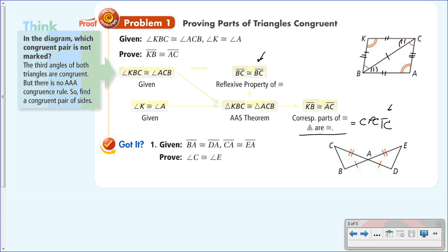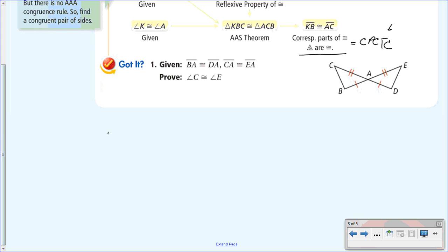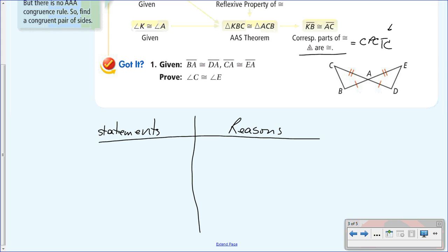Once you use one of the four methods to prove the triangles congruent, as long as you have corresponding parts, they're congruent. For number one: given BA is congruent to DA, and CA is congruent to EA, prove angle C is congruent to angle E. In our two-column proof, statement one is our given: BA ≅ DA and CA ≅ EA.